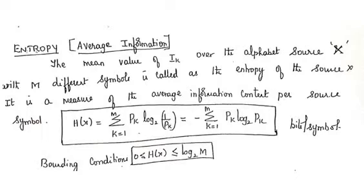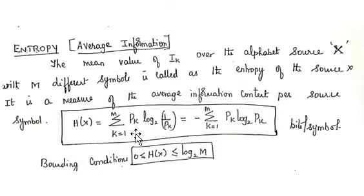The unit for entropy is bits per symbol and it is denoted by H of X. The entropy must be as high as possible in order to ensure the maximum transfer of information. The formula for entropy is H(X) = summation k=1 to M of pK log(1/pK).